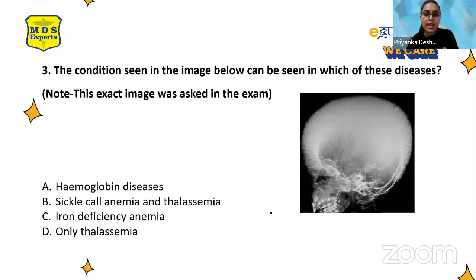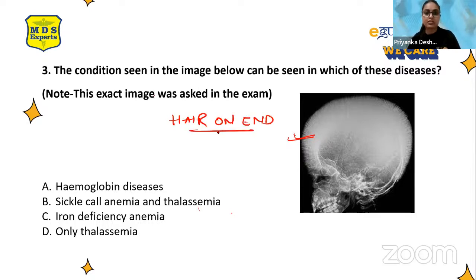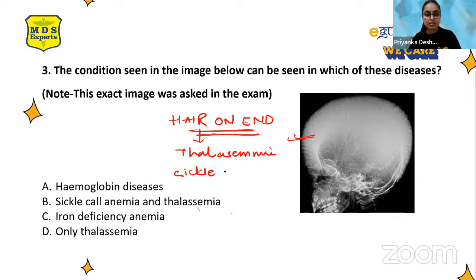The next question: the condition seen in the image below can be seen in which of these diseases? The options are hemoglobin diseases — sickle cell anemia and thalassemia — iron deficiency anemia, and only thalassemia. Looking at the lateral skull radiograph, you have to identify the appearance, which is the hair-on-end appearance. Hair-on-end appearance is seen in thalassemia, sickle cell anemia, and chronic iron deficiency anemia.